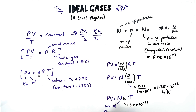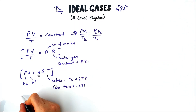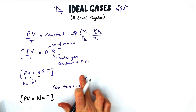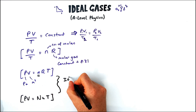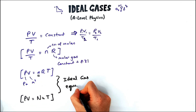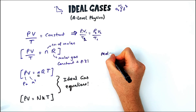Use PV = nKT if you want to know the number of particles or you're given the number of particles. These two equations together — PV = nRT and PV = NkT — are known as the ideal gas equation. You're given both, so make sure you know which one to use in each instance.